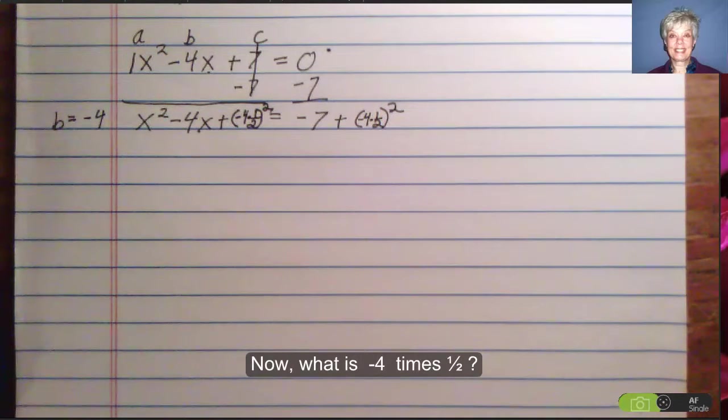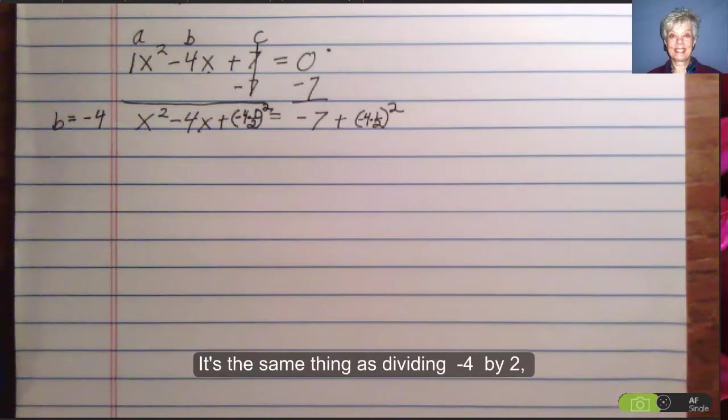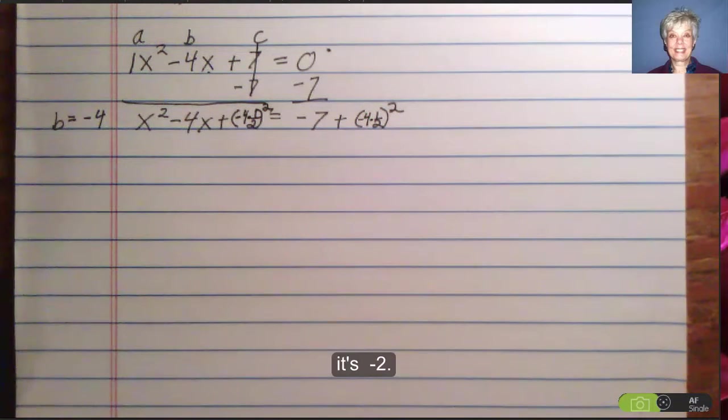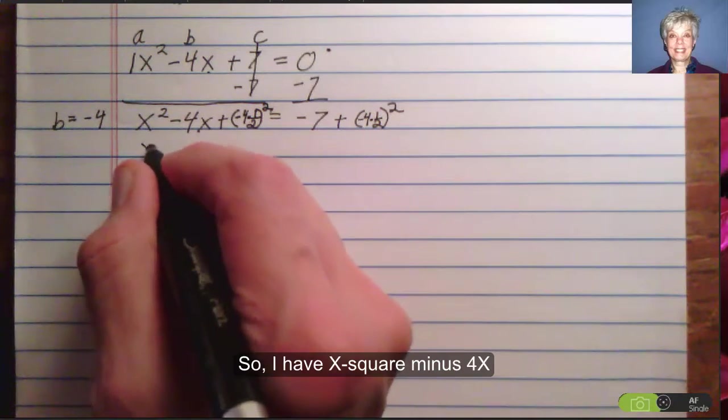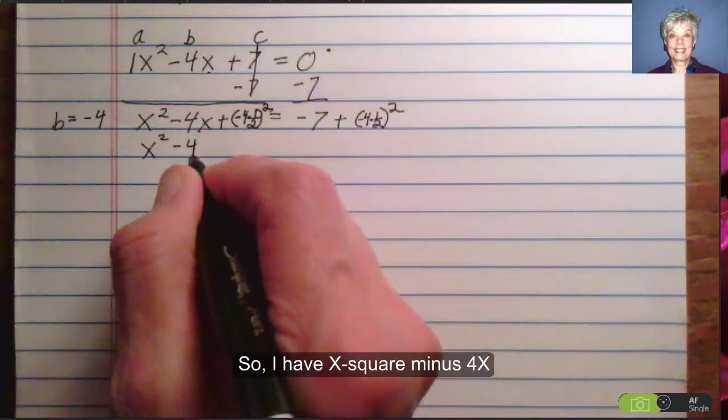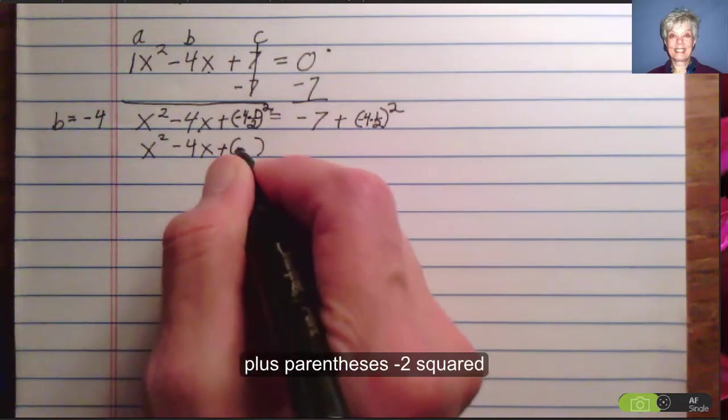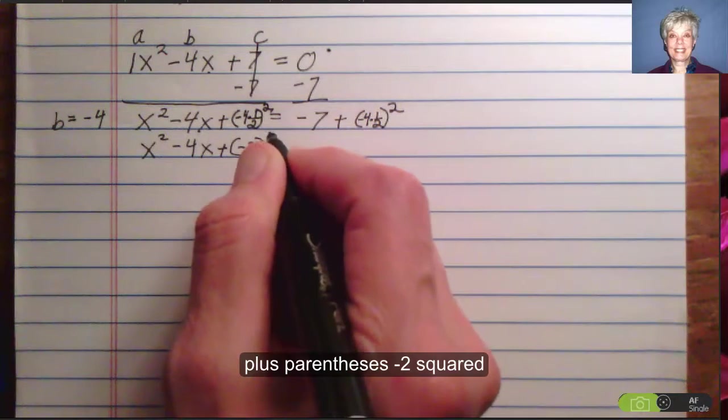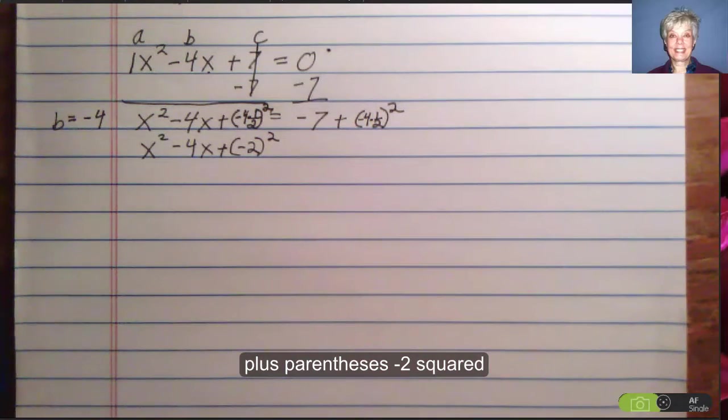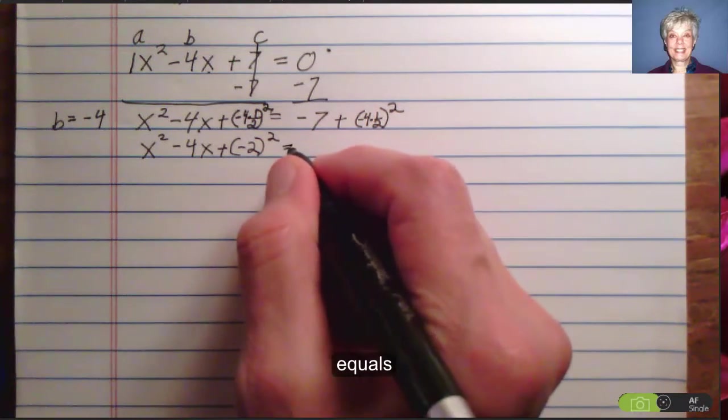Now what is negative 4 times 1 half? It's the same thing as negative 4 divided by 2. It's negative 2. So I have x squared minus 4x plus parentheses negative 2 squared equals negative 7 plus negative 2 squared.